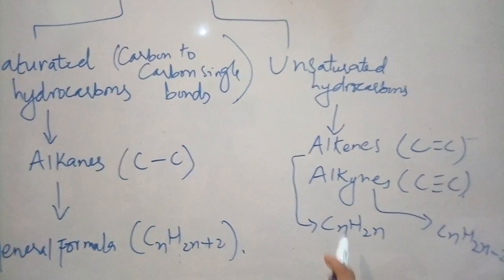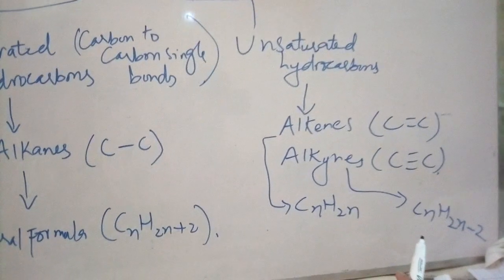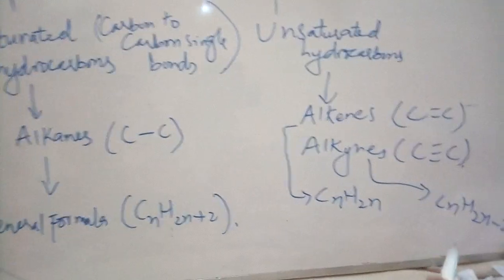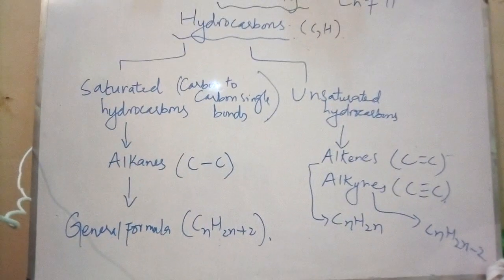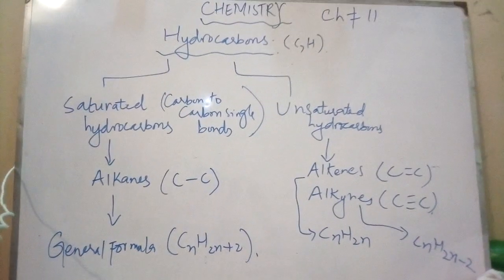Alkenes have the general formula CnH2n, and alkynes have the general formula CnH2n-2. Now this value n can be 1, 2, 3, and so on.